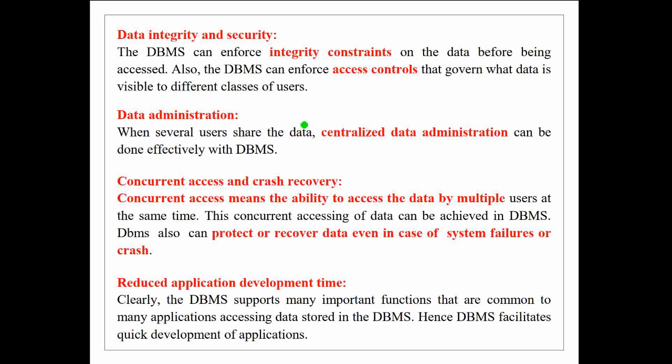Next is data integrity and security. DBMS achieves data integrity by defining constraints on the data before it is accessed. It also achieves security by defining access controls in order to govern what data is visible to which classes of users.